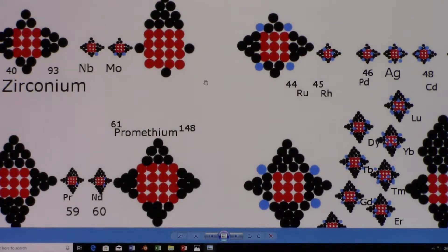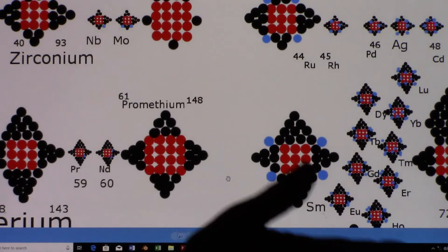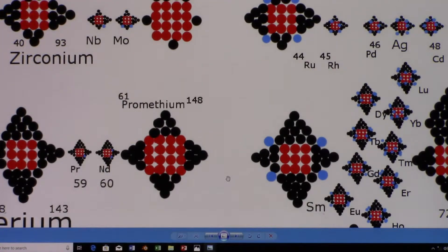There's promethium, which is right below technetium, and it also has the four-layer cube. That's how I discovered that this was a trend in the periodic table.